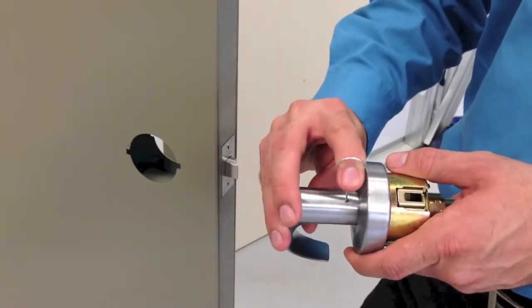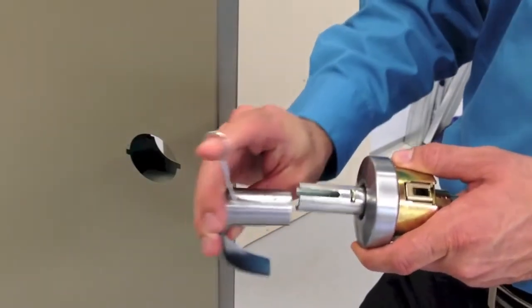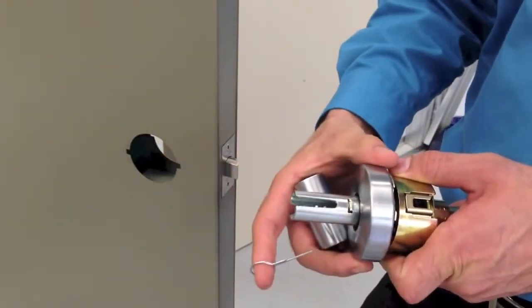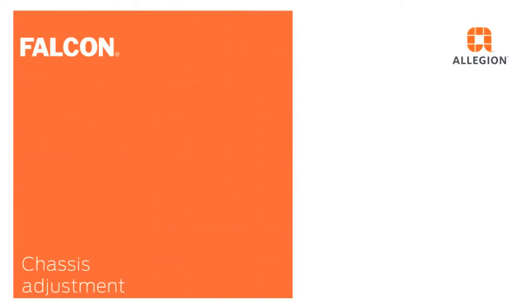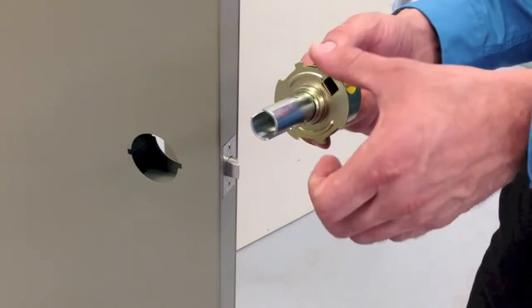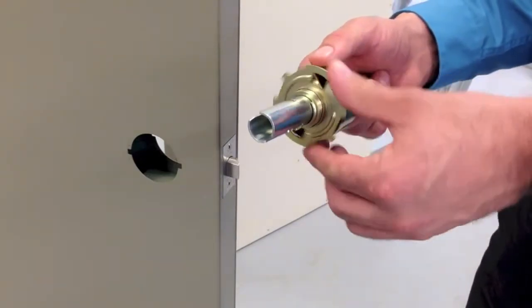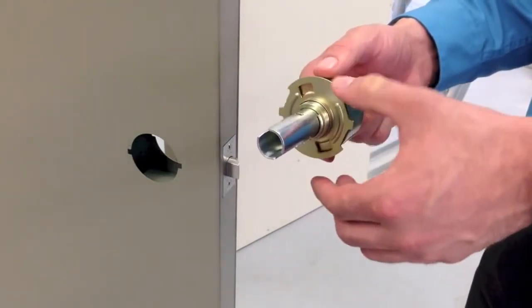Remove the outside lever and spring cage from the chassis. The Falcon W chassis must be adjusted to match your door thickness. To adjust the chassis, first turn the adjustment plate clockwise until it stops.